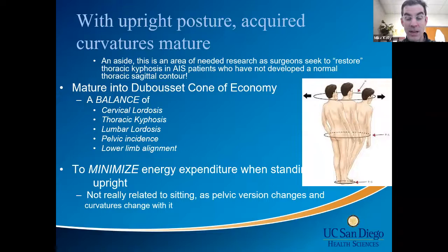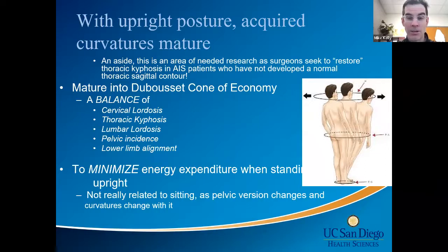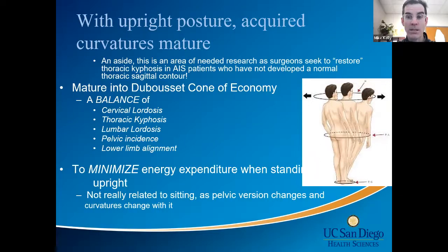Then you stand upright and develop the ability to stand without expending energy — a balance of sacral alignment (pelvic incidence), lumbar alignment (almost always lordosis), thoracic kyphosis, and cervical alignment — to get you to stand in what's called the cone of economy. That is the position where you can stand without expending energy, and it's the departure from the cone of economy that makes some people seek surgical treatment.